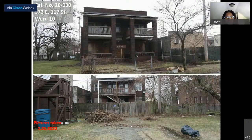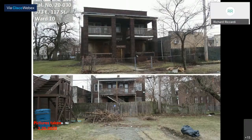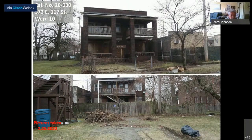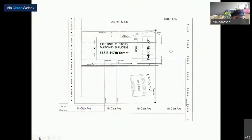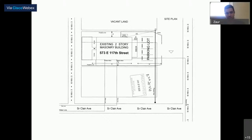Board members discuss whether the applicant even needs to be at the hearing if he is only going forward with four units. It is suggested the applicant could withdraw. The applicant clarifies his main question was whether he can legally maintain four units without providing parking, and explains the originally proposed rear parking lot was blocked because access would require crossing church-owned land.